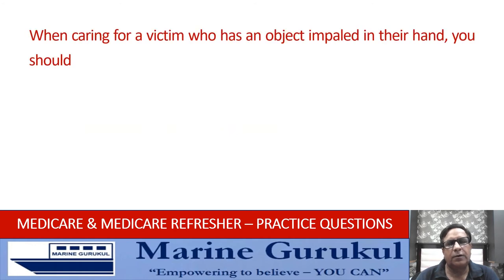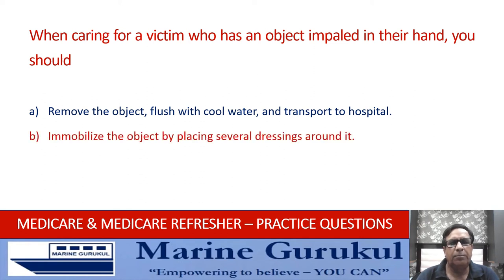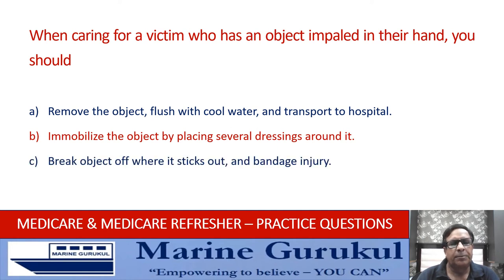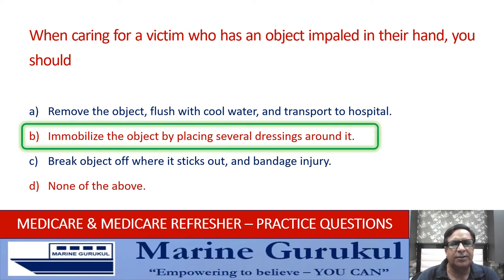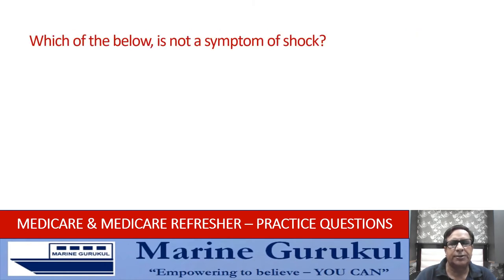When caring for a victim who has an object impaled in their hand, you should: remove the object, flush with cool water, and transport to hospital; immobilize the object by placing several dressings around it; break the object off where it sticks out and bandage the injury; or none of the above. The correct action is B — immobilize the object by placing several dressings around it, and if circumstances permit, send the patient to the hospital.